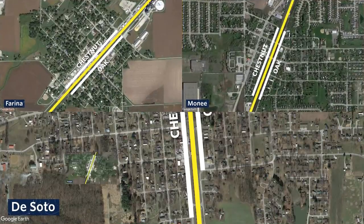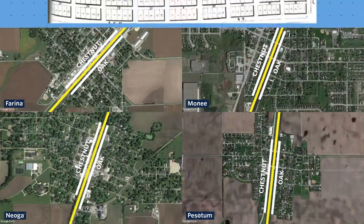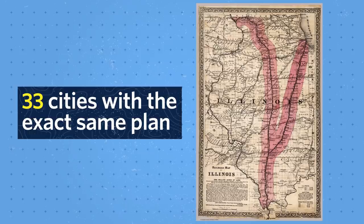All of these towns were designed with the exact same grids and even the exact same street names. In fact, here's the original template for new cities built along the Illinois Central Railroad. All you had to do was fill in the blank for the town name, stake out the streets, and build the railroad — you'd have yourself a new town. A total of 33 towns in Illinois share the exact same original plat map.